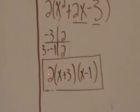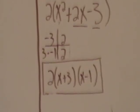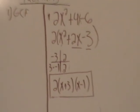So 2 is what we've always had. Parentheses, x plus 3 from this positive 3, x minus 1 from this negative 1. So all this does is add an extra step, and it's essentially the same thing.